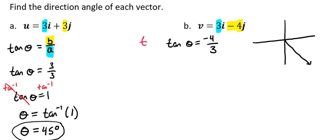If we multiply both sides by the inverse of tangent, what we're going to find is that the inverse tangent of negative 4 thirds gives us the reference angle, approximately negative 53.13 degrees.